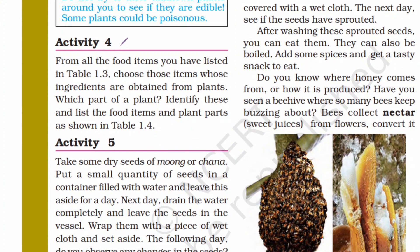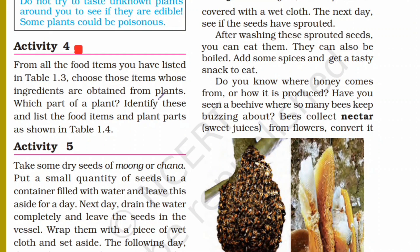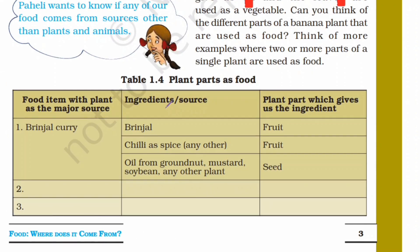Here is Activity 4. This activity is related to the last activity. From all the items you have listed in Table 1.3, choose those items whose ingredients are obtained from plants. You have to write which part of the plant you are using. Identify these and list the food items and plant parts as shown in Table 1.4.